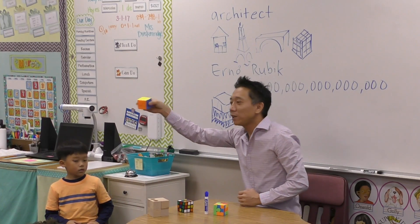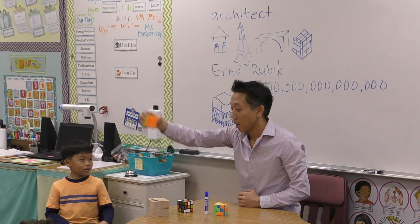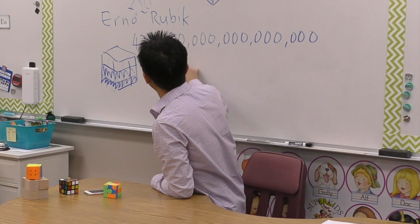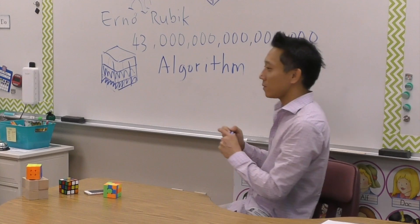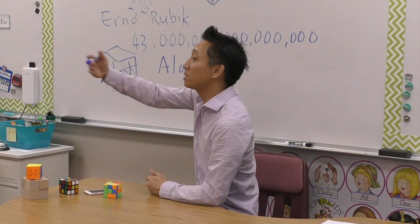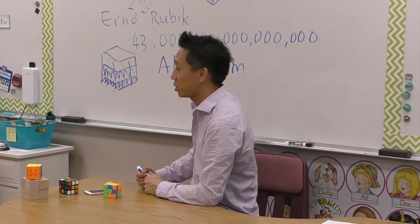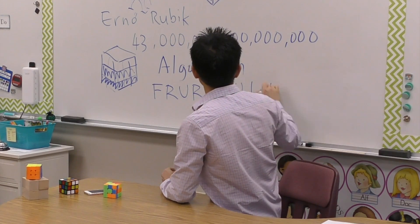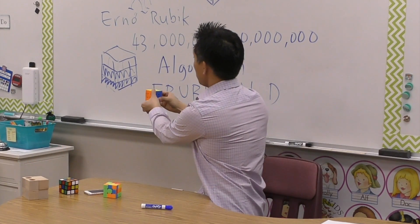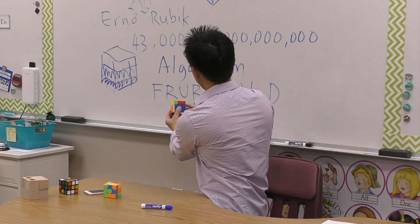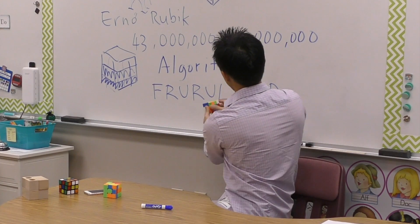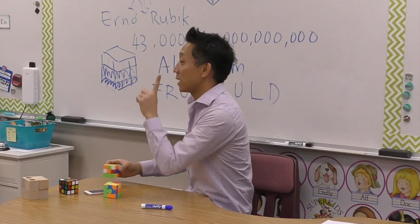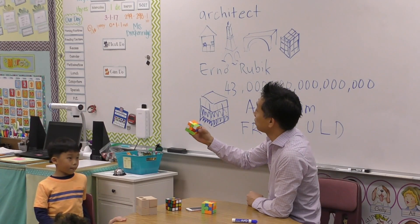I'm sure you're wondering how did he do that! Let me explain. This is a difficult word but you're in first grade so I think you can handle it — it's called an algorithm. An algorithm is a series of instructions that tells you what to do in a certain situation. An algorithm for the Rubik's Cube looks like this — it tells you to move the front side, the right side, the upside, the left side, the downside — a specific sequence of moves.